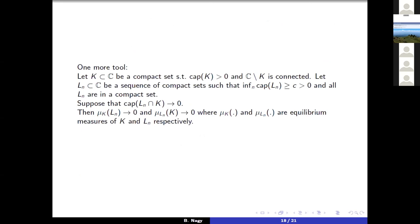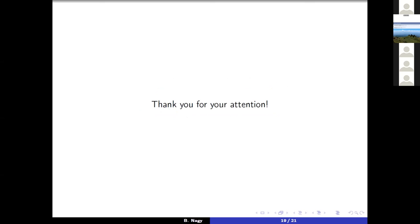One more tool is this one. We have a sequence of sets and we would like to test it with a test set K. We know that in some sense, this L_n set leaves the set K, that is the intersection has zero capacity, has very small capacity. Then we can conclude from this independent capacity, the measure. I'm probably out of time. Thank you for your attention. If you are interested, there are some references here as well.